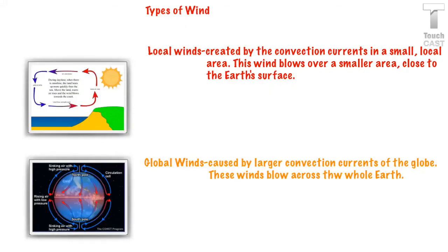So there's different types of wind. You've got local winds which are created by convection currents that happen in these small local areas. And this wind blows over a smaller area, closer to the Earth's surface, which is what's being shown in this picture. Global winds are caused by larger convection currents of the globe, and these winds blow across the whole Earth. And remember, pause this. Draw these pictures. These are great pictures to have. And I'll be looking for it.